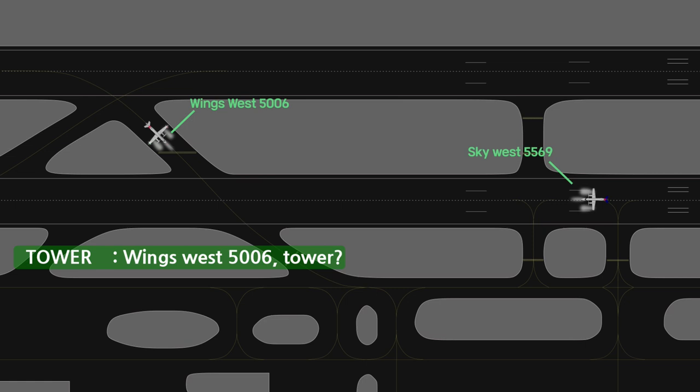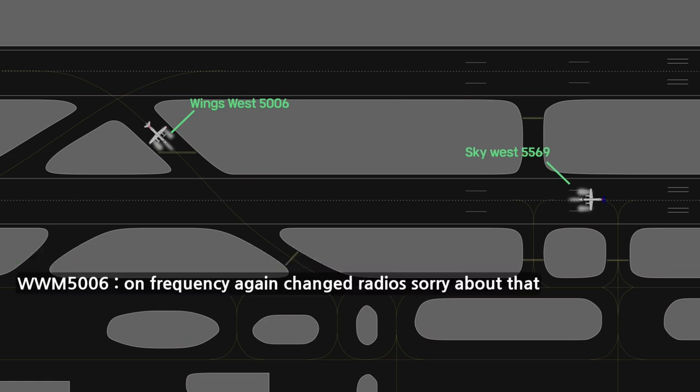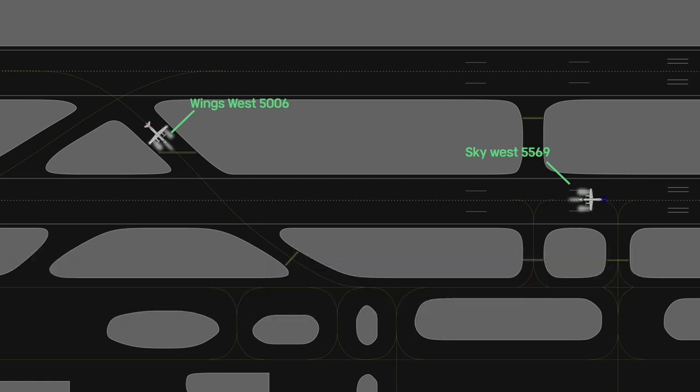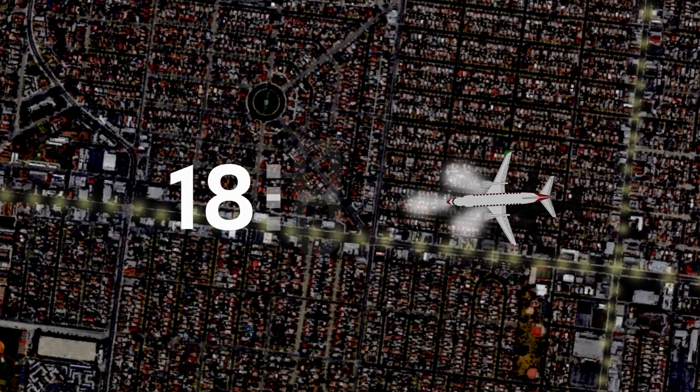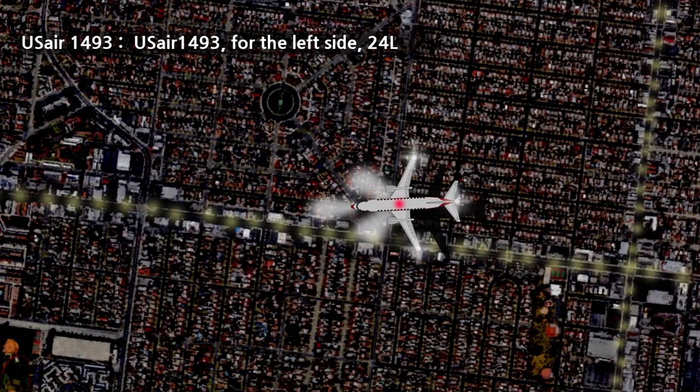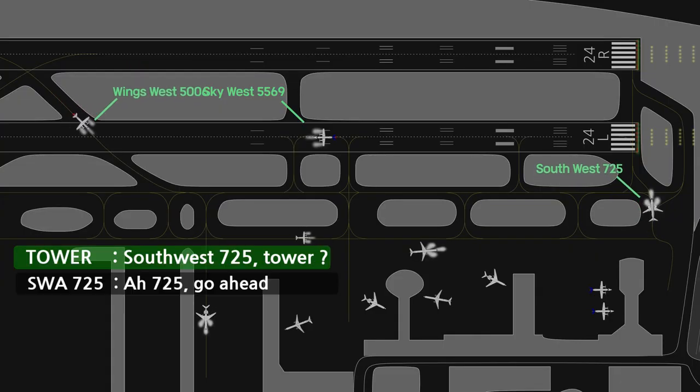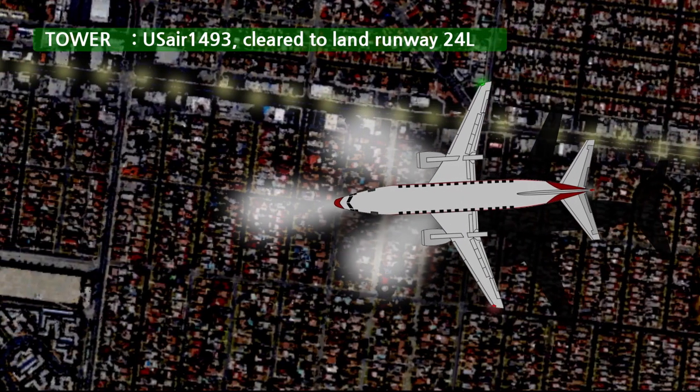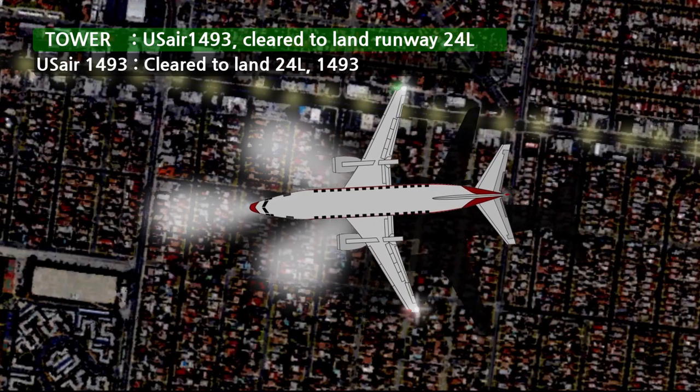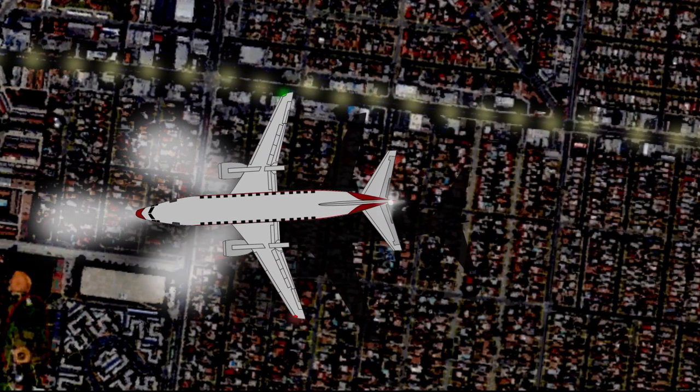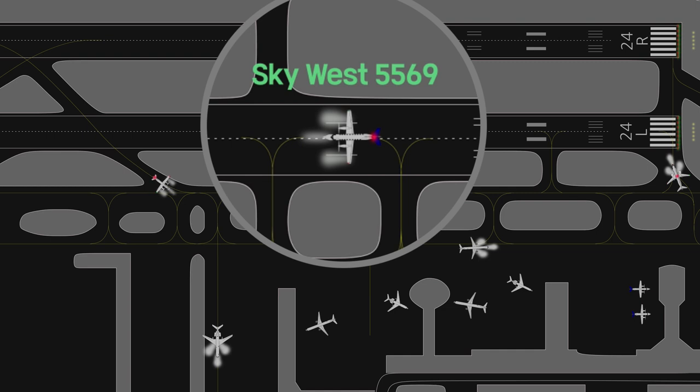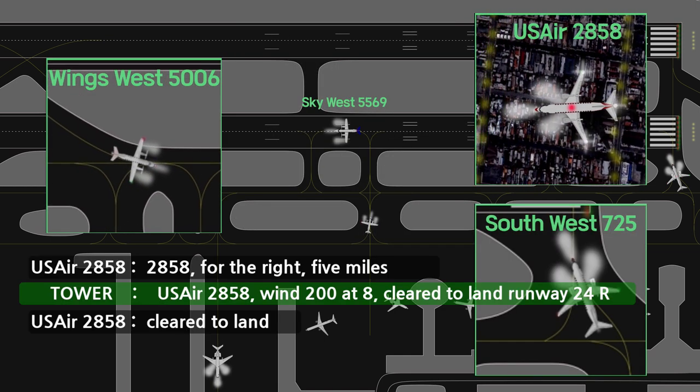The controller attempted to communicate with Wings West 5006 several times when the cross was possible, but the failure was repeated because Wings West 5006 set the wrong frequency. This unnecessary communication was enough to distract the controller. The US Air 1493 pilot once again informed the controller of his position. The controller conducted other radio transmissions and then issued a landing clearance.